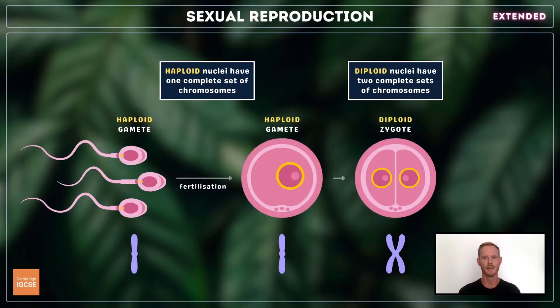During fertilization, two haploid gametes fuse to form a zygote. The zygote is a diploid cell, as it contains two complete sets of chromosomes, one set from the mother and one from the father.